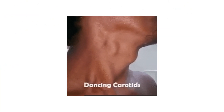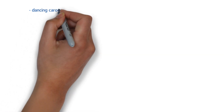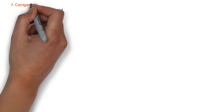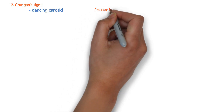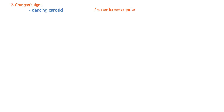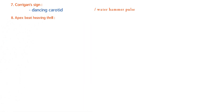There is pulsation in the carotid, called dancing carotid, and this sign is known as Corrigan's sign. In association with Corrigan's sign, we can also observe the water hammer pulse.